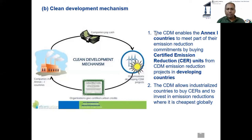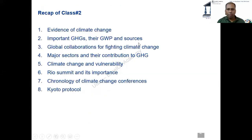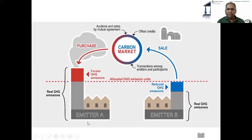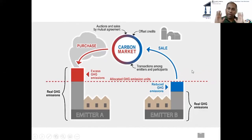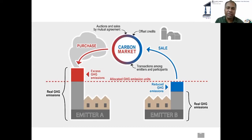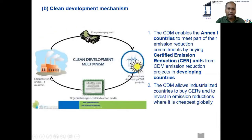Last class we saw Emitter A — an Annex One country — and Emitter B. Emitter A has produced excess CO2, so he quote-unquote transfers that CO2 to another country and pays money, but it is not a physical transfer — it is only an assumed transfer. That is simple carbon trading. Now how is CDM different? The principle is somewhat similar — again companies in Annex One countries, projects in developing countries.